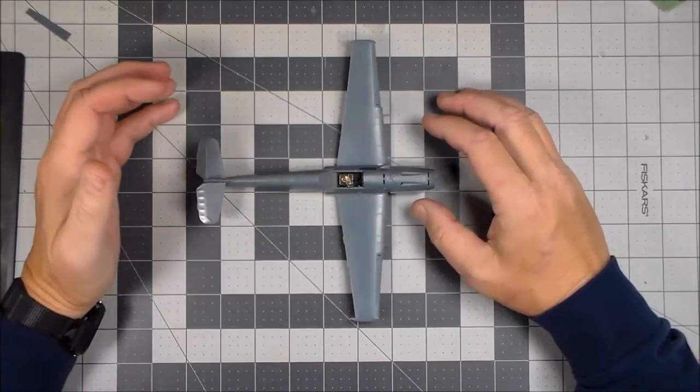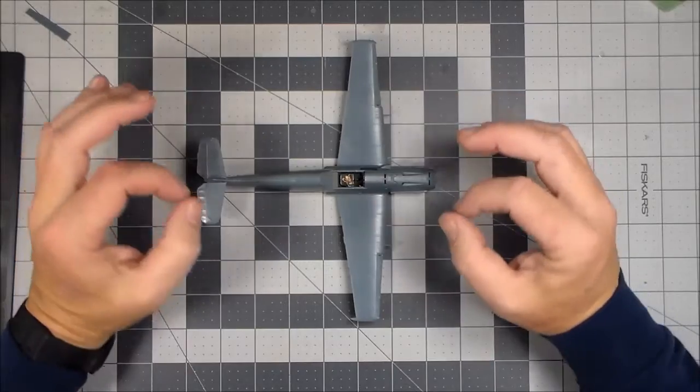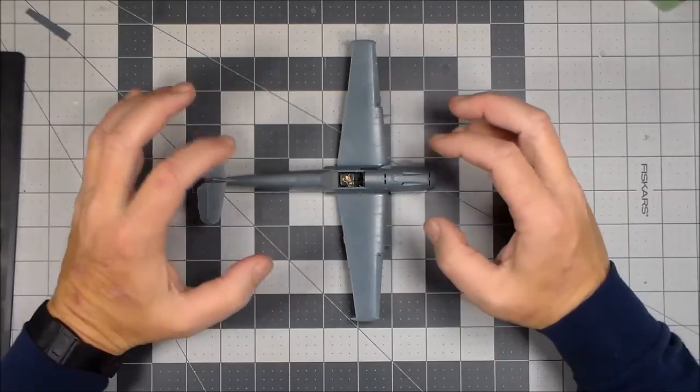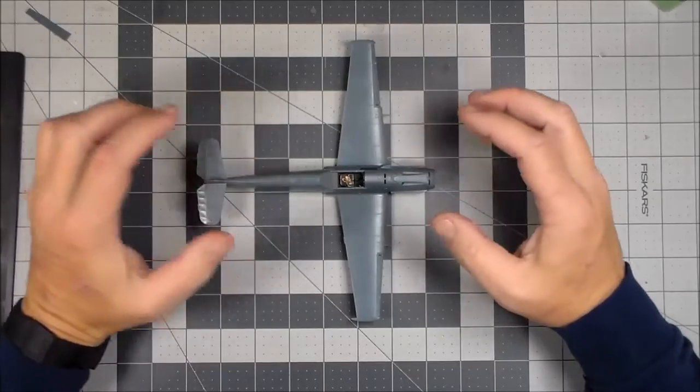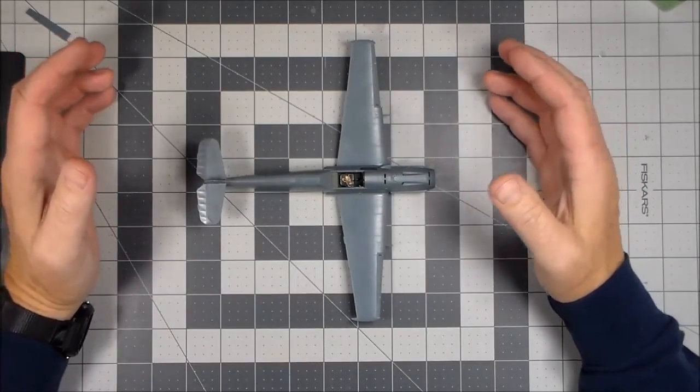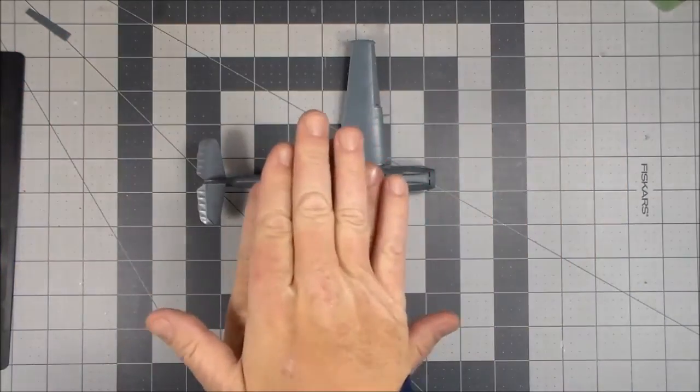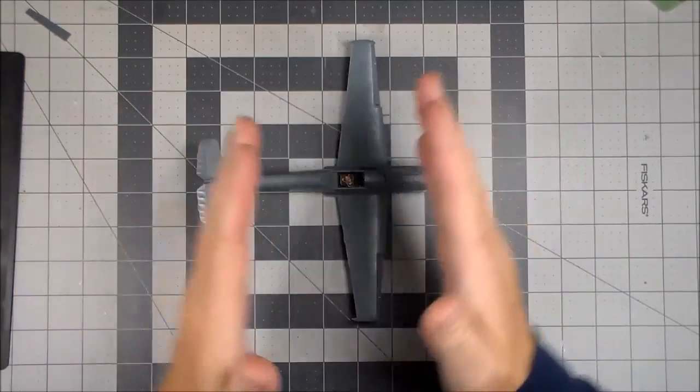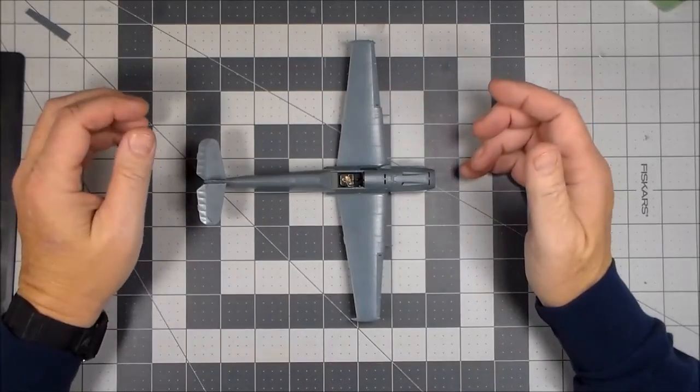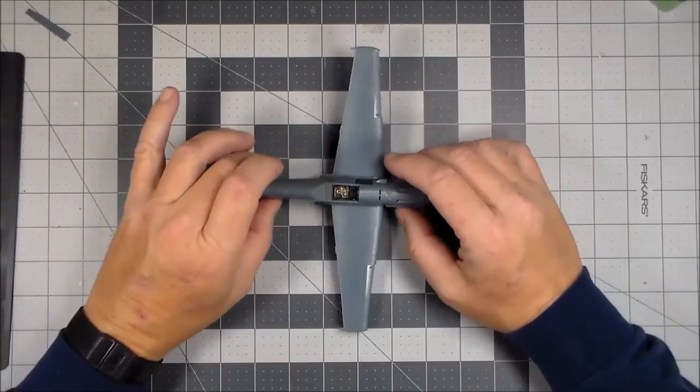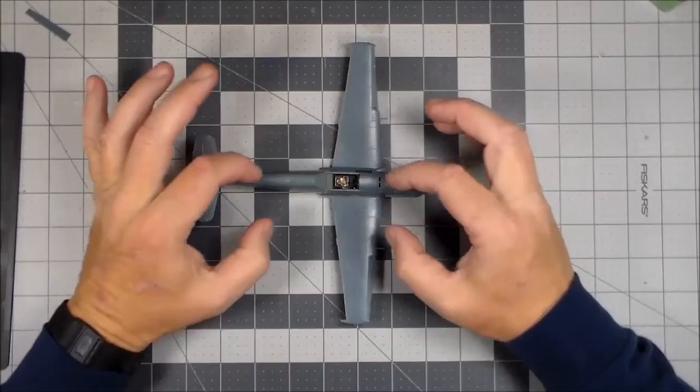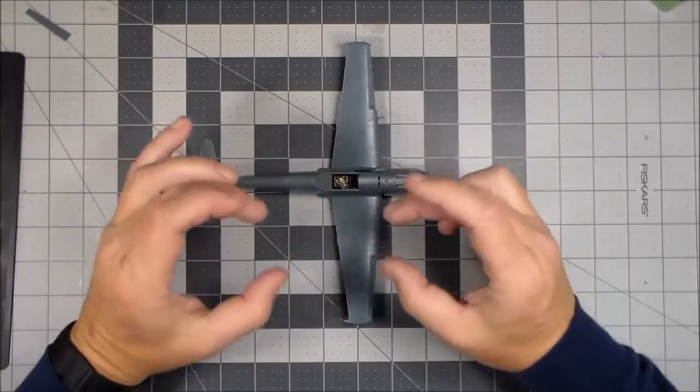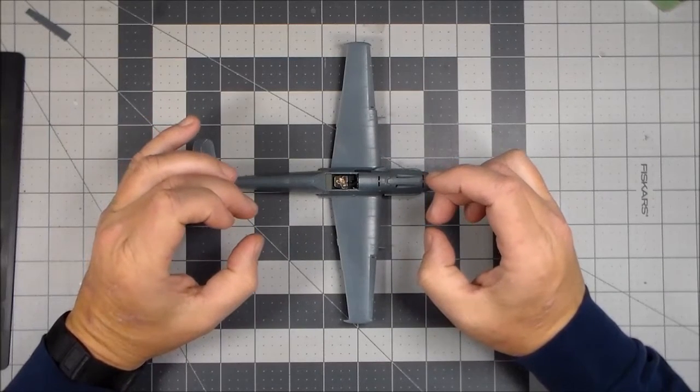But the method I use will work on kits that maybe don't fit together all that great. Now some of the jet aircraft that have upper portions and sides and all, I don't know if this would work on that, but for World War 2 aircraft with a simple split fuselage, this is how I do it. What I would do is take the two fuselage halves, make sure they're all cleaned up, test fit them and make sure there's no issues.